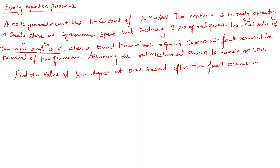So delta naught is 5 degrees. A three-phase to ground short circuit fault has occurred, and we need to find out how much deviation happens in delta — that is, what is delta after the fault. Sometimes they may ask in radians; just convert degrees to radians. Here, they have not given the number of cycles but have directly given the time value: t equals 0.02 seconds, which is 20 milliseconds. Since the frequency is 50 Hz, 1 divided by 50 equals 0.02 seconds, so this corresponds to the first cycle.